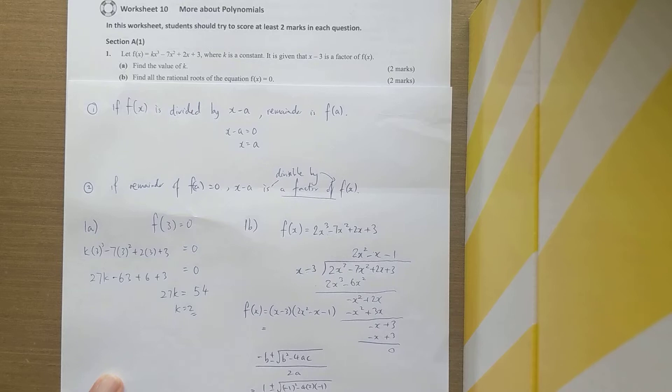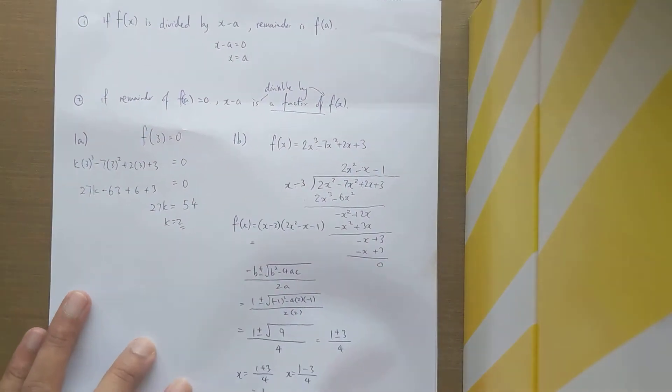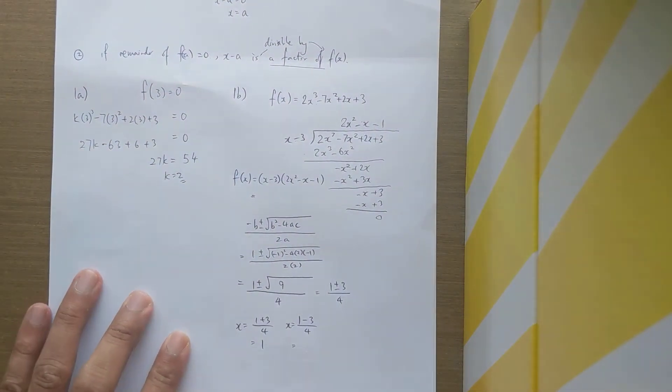In this case, 1 plus 3 is 4 divided by 4, which is 1. 1 minus 3 is negative 2, negative 2 divided by 4 is negative one half.